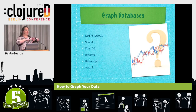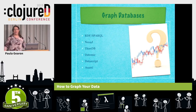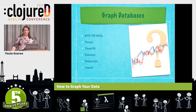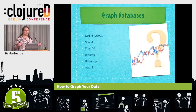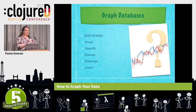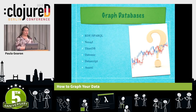Within graph databases, there's a whole family of different things. A really big one, and one that I've worked on for many years, are the RDF SPARQL databases. These are based on a set of standards from the World Wide Web Consortium, and they define a data model which is a graph. The SPARQL query language is specifically about talking to graphs and manipulating them. Most other graph databases follow the same sorts of semantics as this. One of the most popular ones is Neo4j.